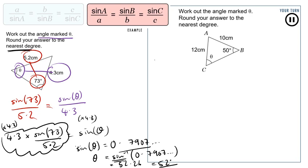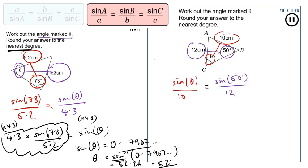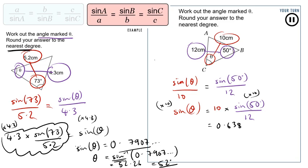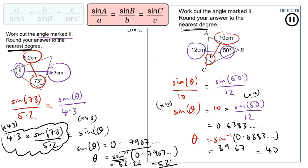In the next example, we identify the matching pairs, write out the equation, and rearrange by multiplying both sides by 10. The calculator gives a value for sine of theta — don't round yet — and applying inverse sine gives 39.67 degrees, which rounds to 40 degrees to the nearest degree.